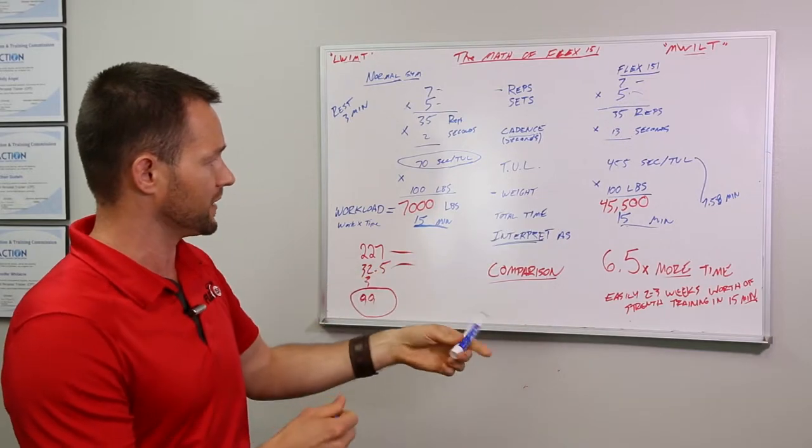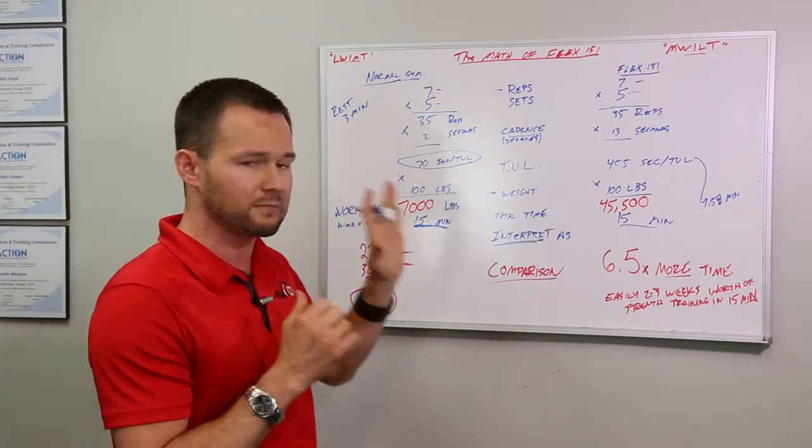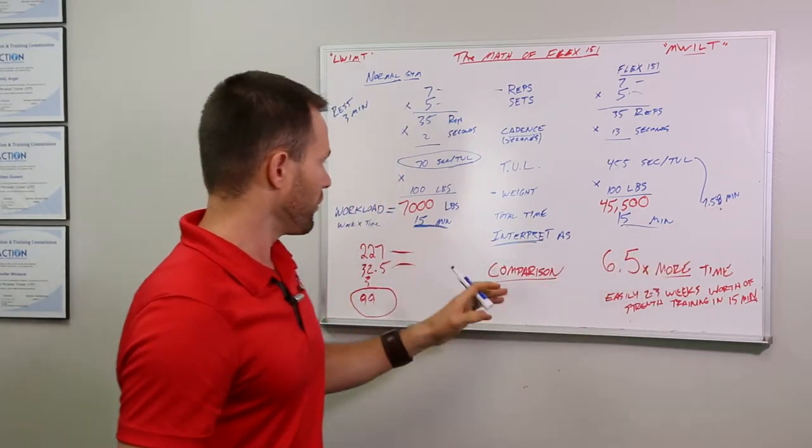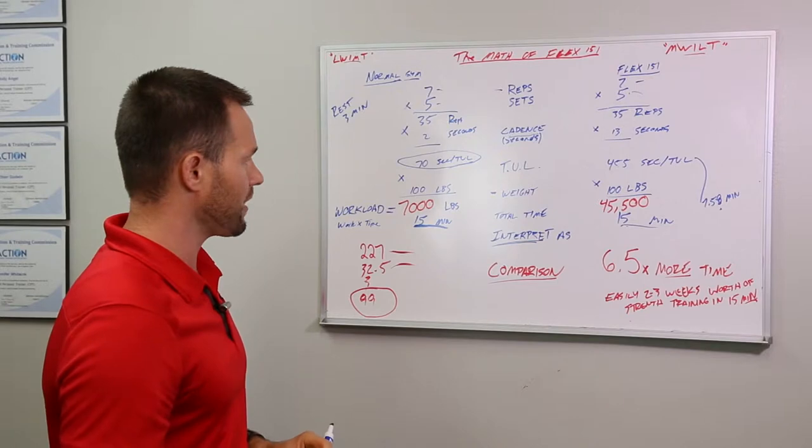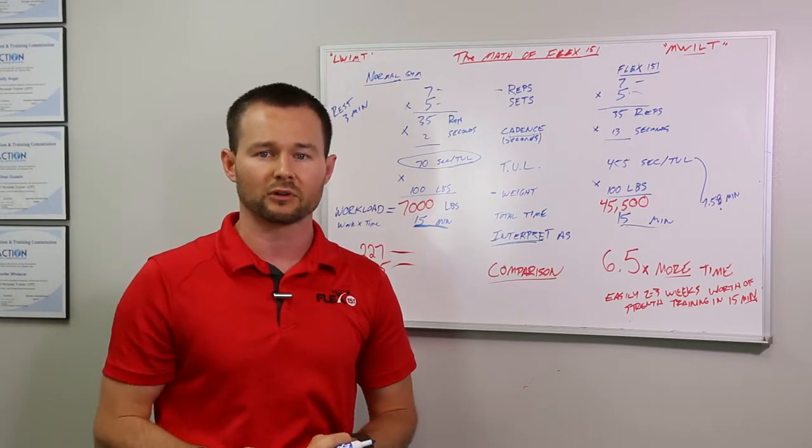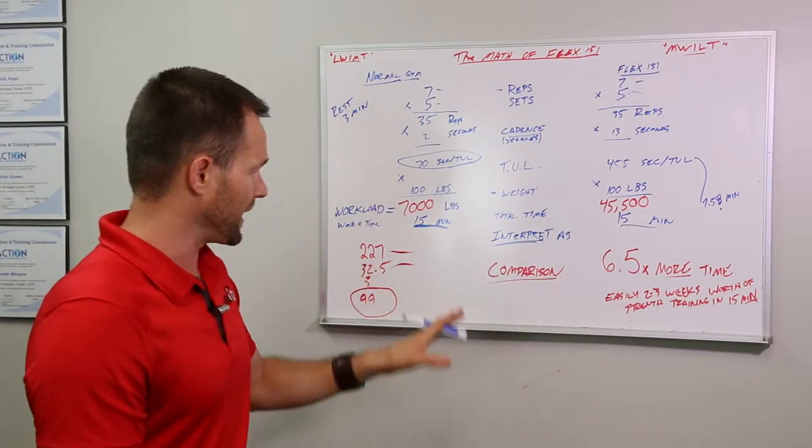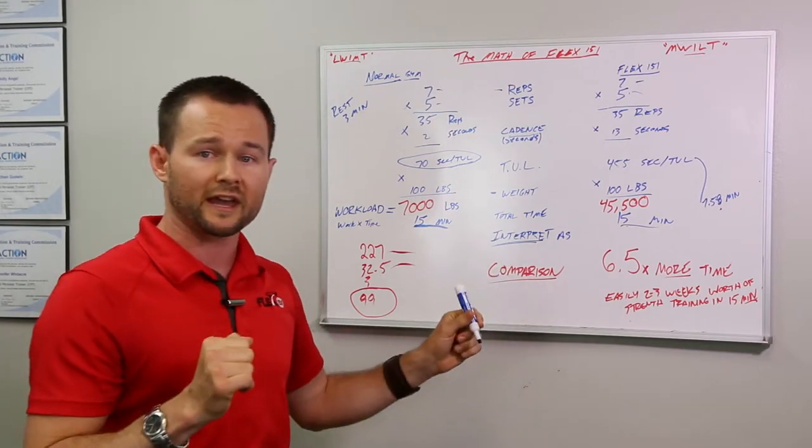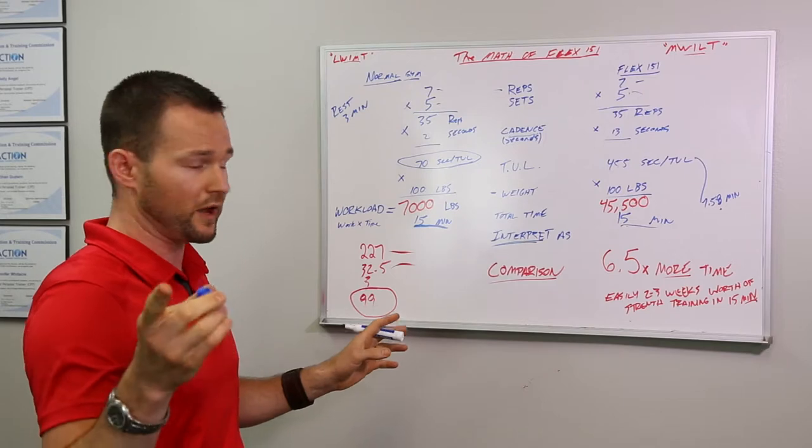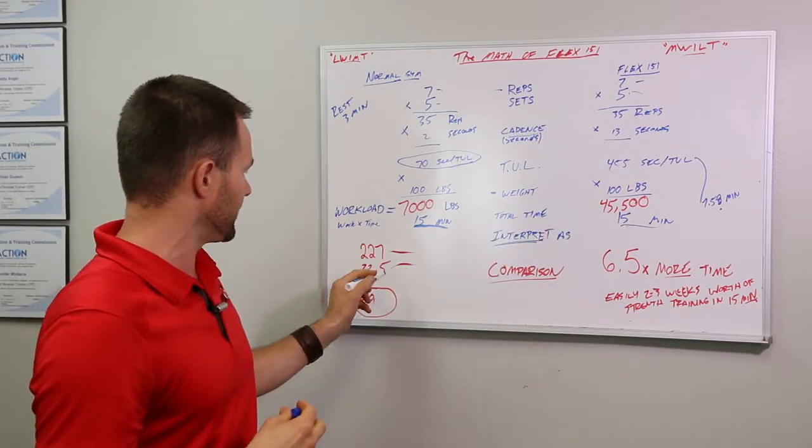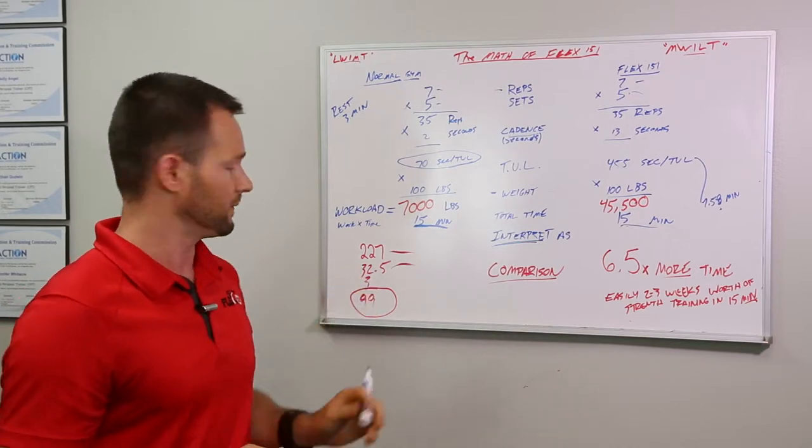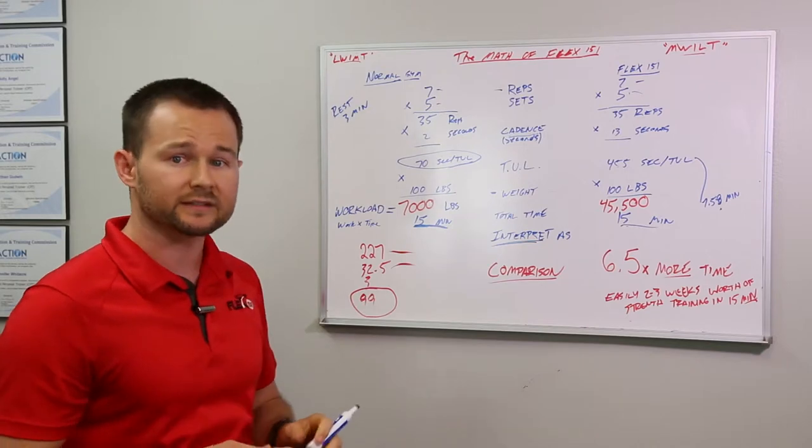Now, that 45,500 pounds is the workload that I administered on my body or imposed on my body in 7.58 minutes. So, that's the interpretation. Now, why does it matter? That's the big thing. I could have made up all these numbers, and you still could be a little skeptical or just unsure. But when I do that math and I say, now, Sean, you used to work out in the gym, and you used to do a lot more than just a simple 35 reps. Come on here. And I'm with you. So, to equal the workload in a standard facility, you would need 227 reps or 32½ sets or 99 minutes of activity.